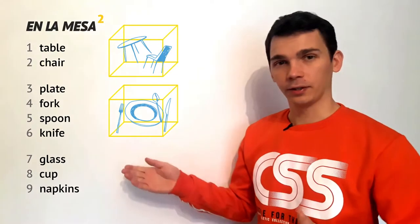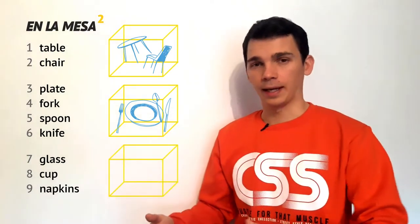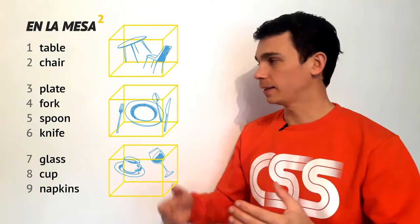And then you have three vertical objects: a glass, a cup, and napkins.